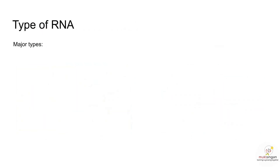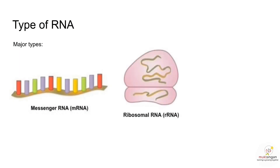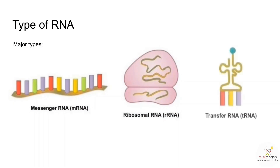There are different types of RNA, but in this video we shall look into three major types: messenger RNA (mRNA), ribosomal RNA (rRNA), and transfer RNA (tRNA). Each of them has a specific function, but altogether their main role is to assist in protein synthesis.